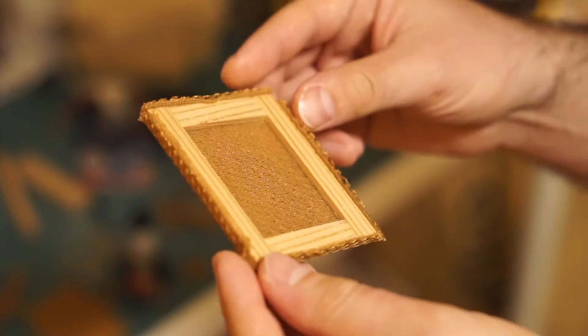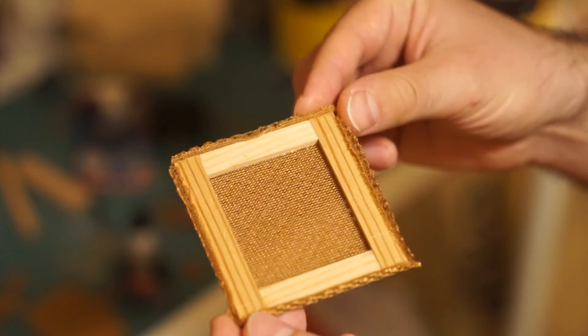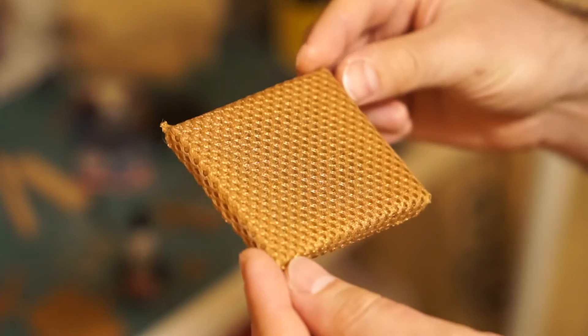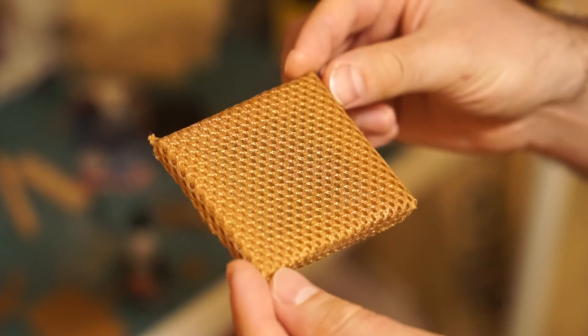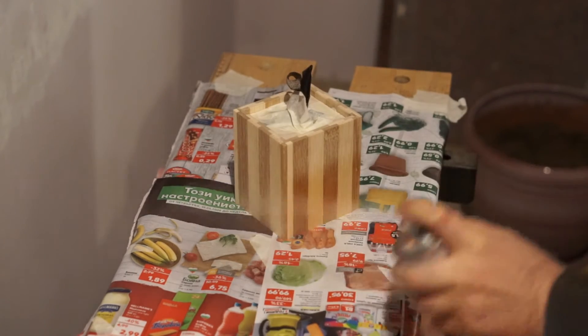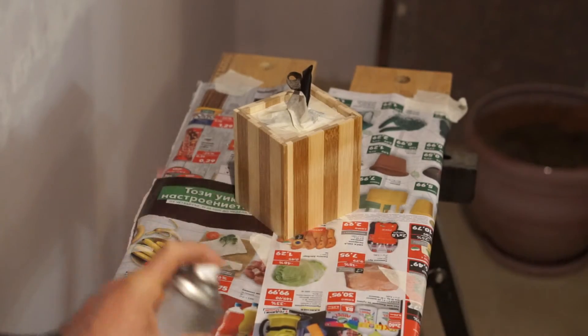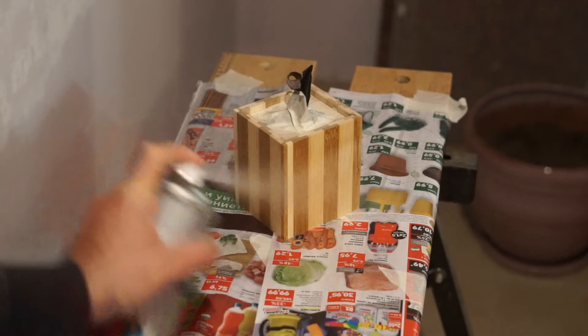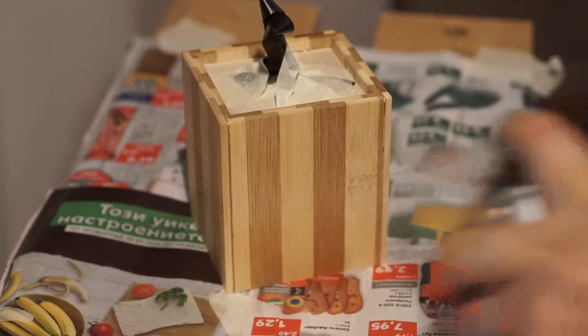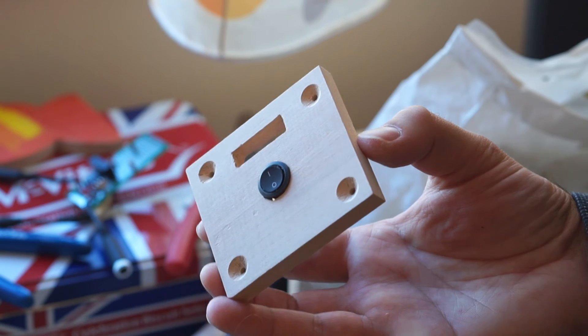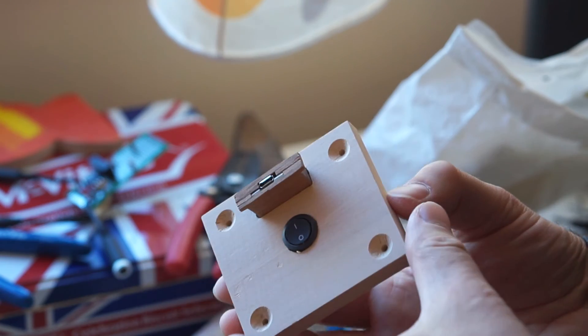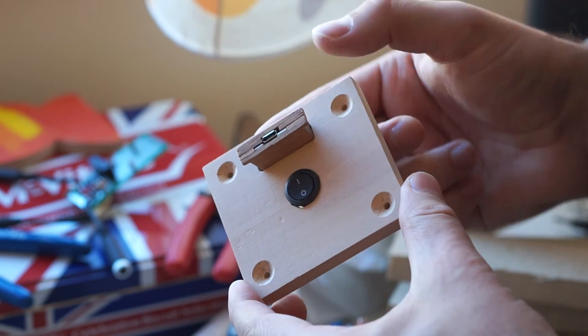After that, I trimmed the fabric and glued it so that it wraps around the sides of the frame. Later, I sprayed the speaker with several coats of spray lacquer and let it dry overnight. On the next day, I made a cutout for the battery charging module on the back side. I also mounted a simple power switch to it.